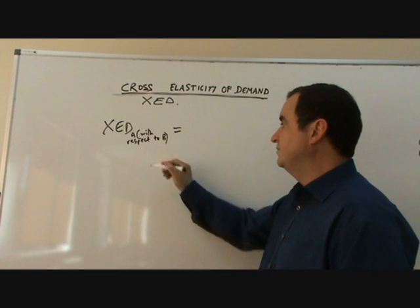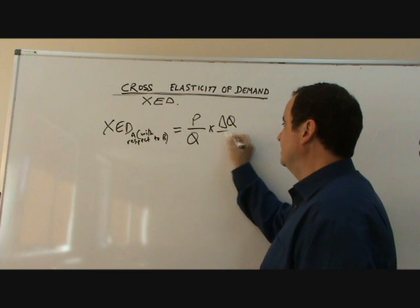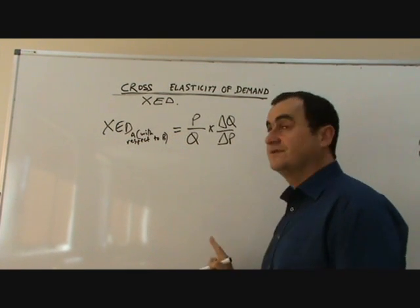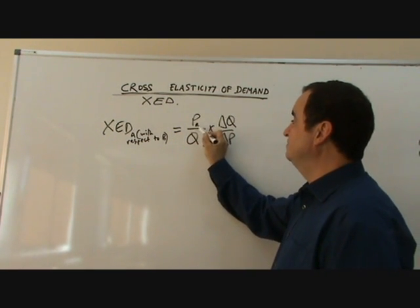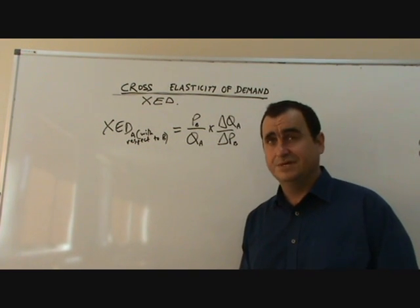Equals, how do we calculate it? Well it's the old equation, P over Q times change in Q over change in P. But of course it's the price of good B and the quantities of good A.